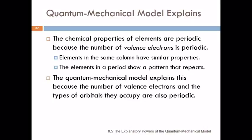So I told you at the beginning of this lecture that the quantum mechanical model explains periodic properties. We see these periodic chemical properties because the number of valence electrons is periodic in the elements. So elements in the same column have similar properties. Elements in the same column have the same number of valence electrons.